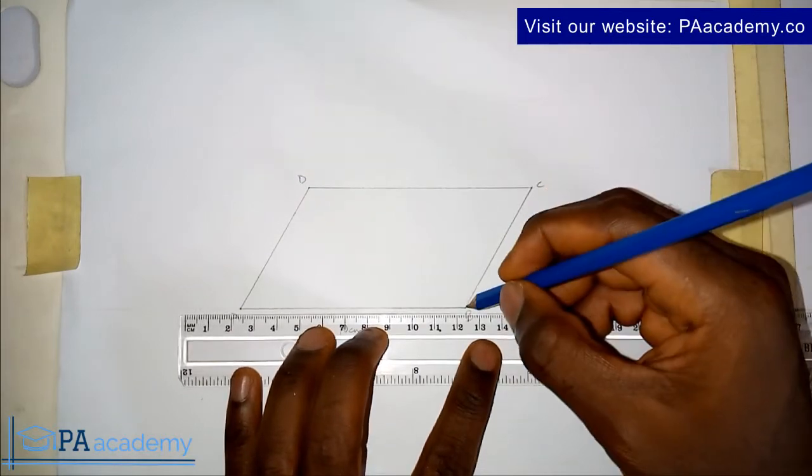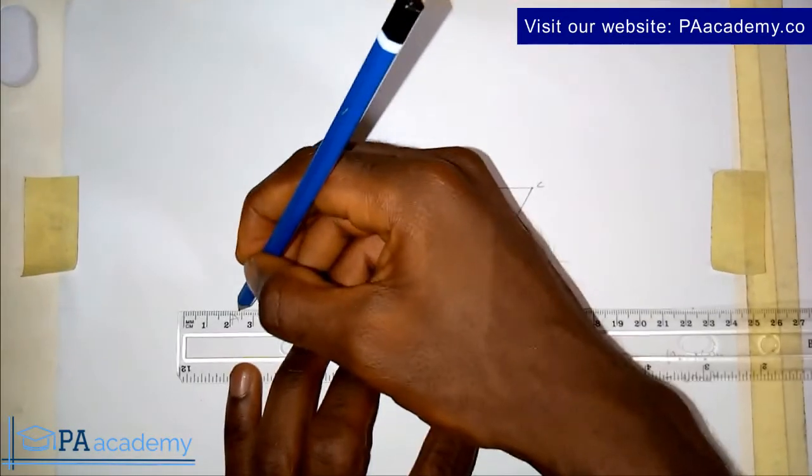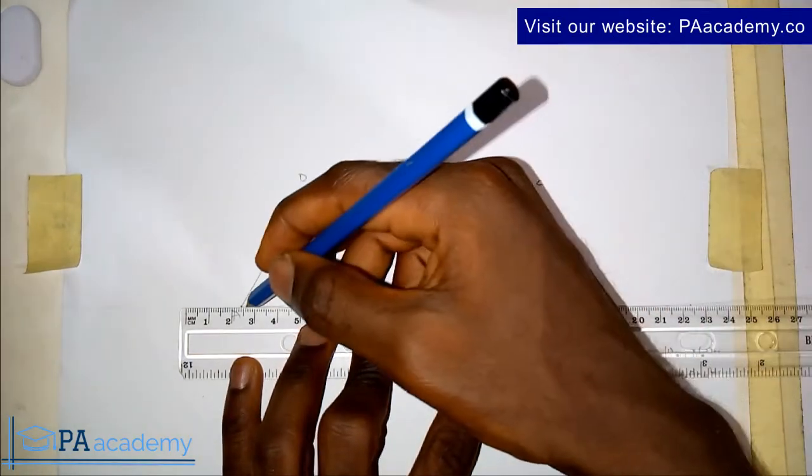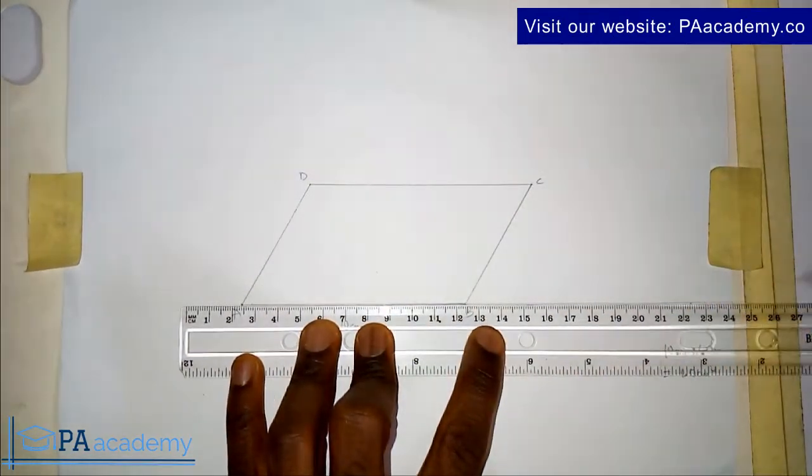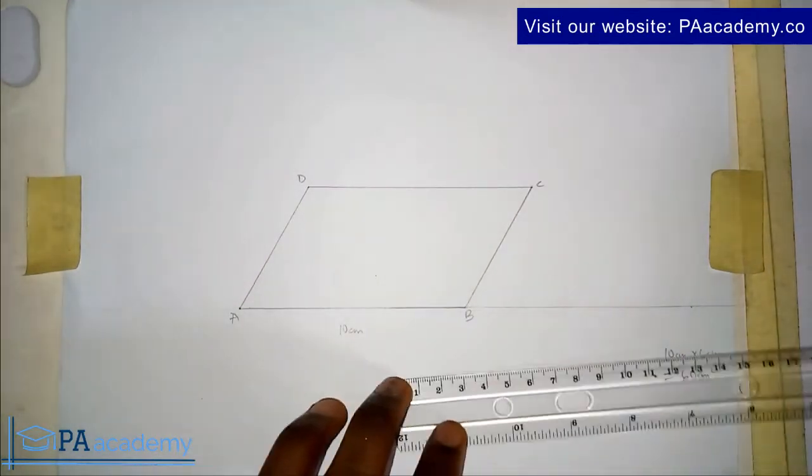So line AB, let me extend it. So I've just extended line AB to the right. From B now I'm going to measure 10 cm.